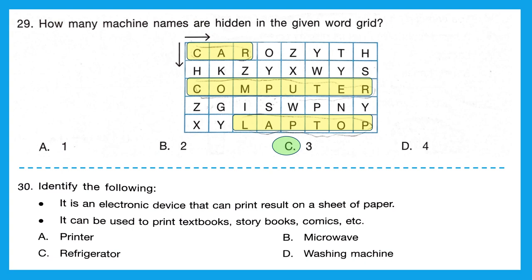Question 30: identify the following — it is an electronic device that can print results on a sheet of paper; it can be used to print textbooks, storybooks, comics, etc. Option A is printer, B is microwave, C is refrigerator, and D is washing machine. Our answer is option A, printer.